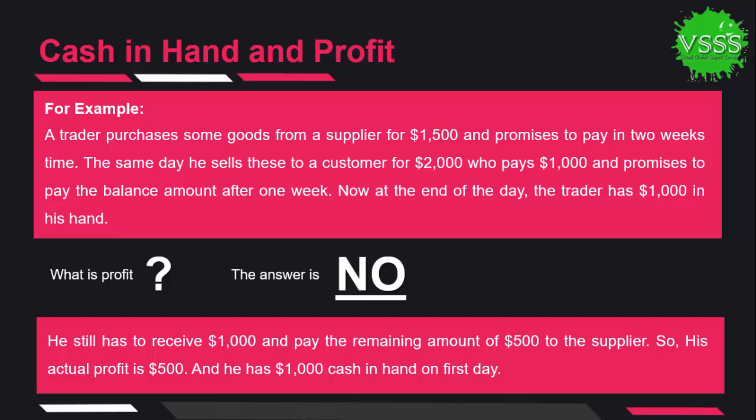At the end of the day, the trader has one thousand dollars in hand. A question arises: is this one thousand dollars the trader's profit? The answer is no — we cannot consider the one thousand dollars as profit because he still needs to receive one thousand dollars from the customer and pay the remaining five hundred dollars to the supplier. When he sells goods for two thousand dollars and receives one thousand dollars, that one thousand dollars is the cash in hand.